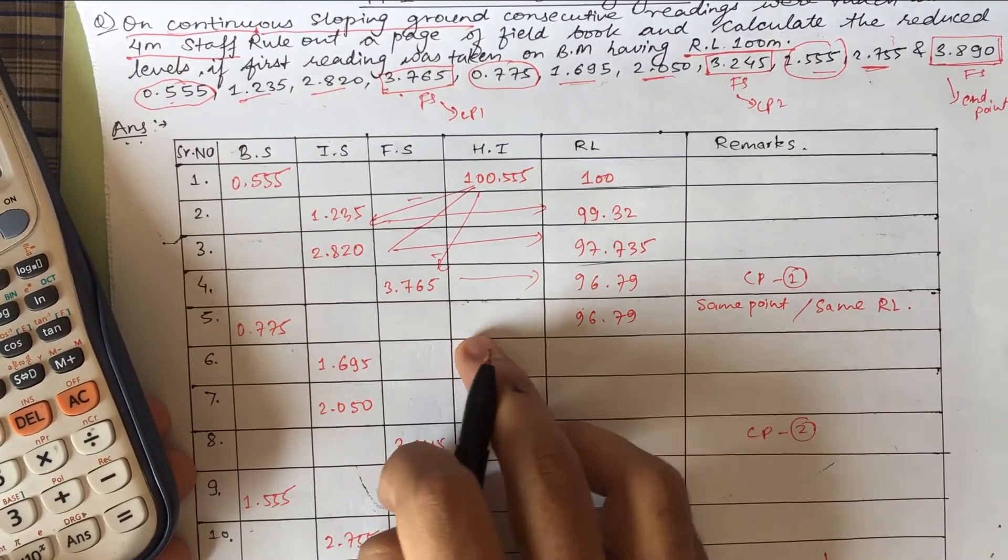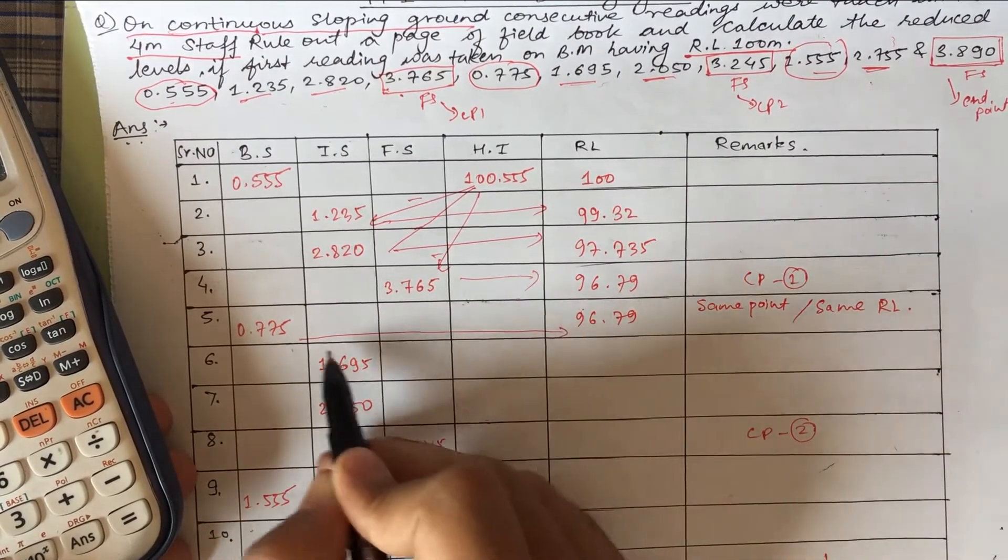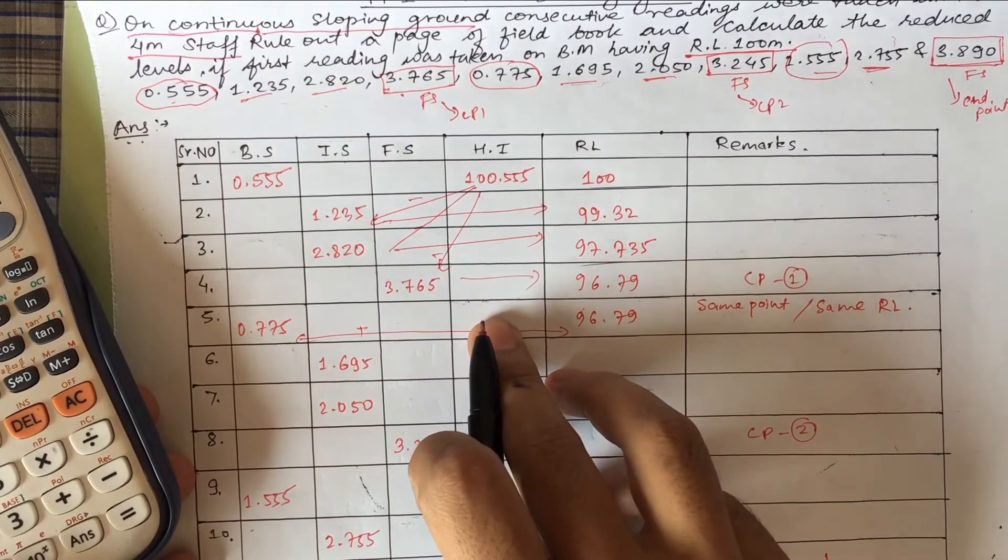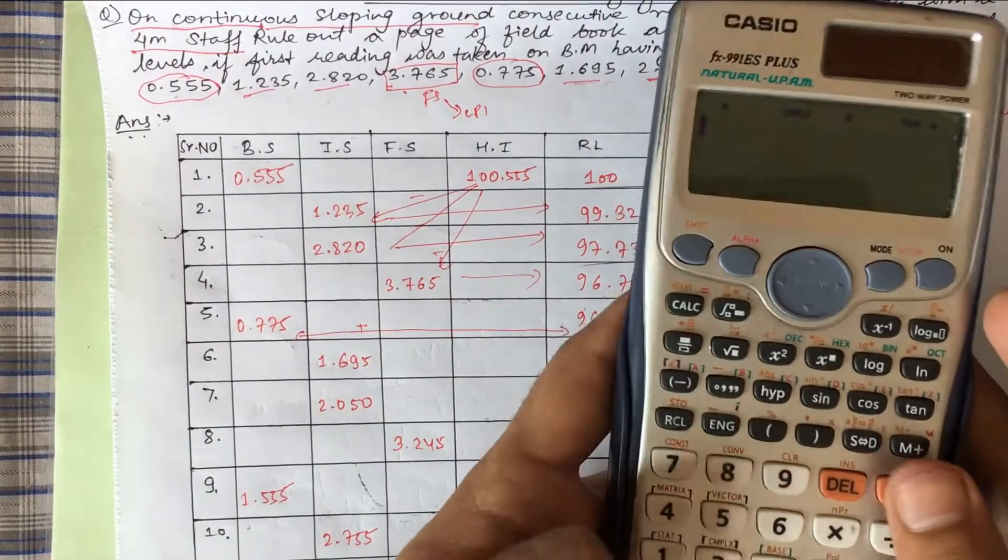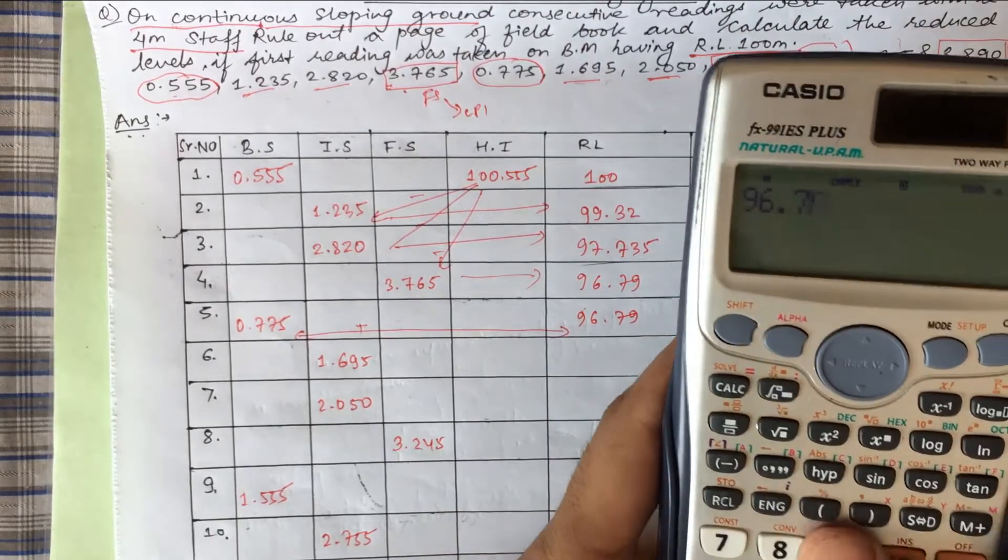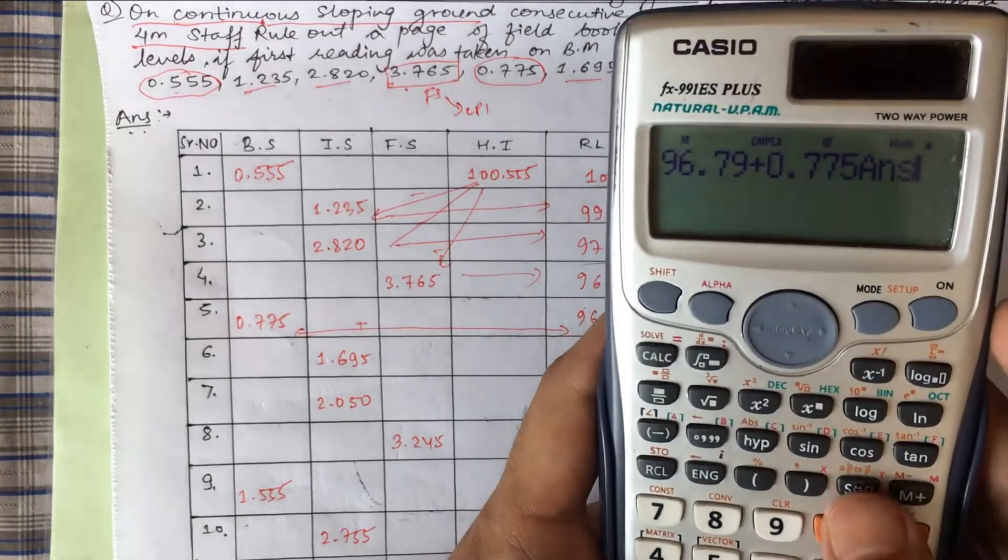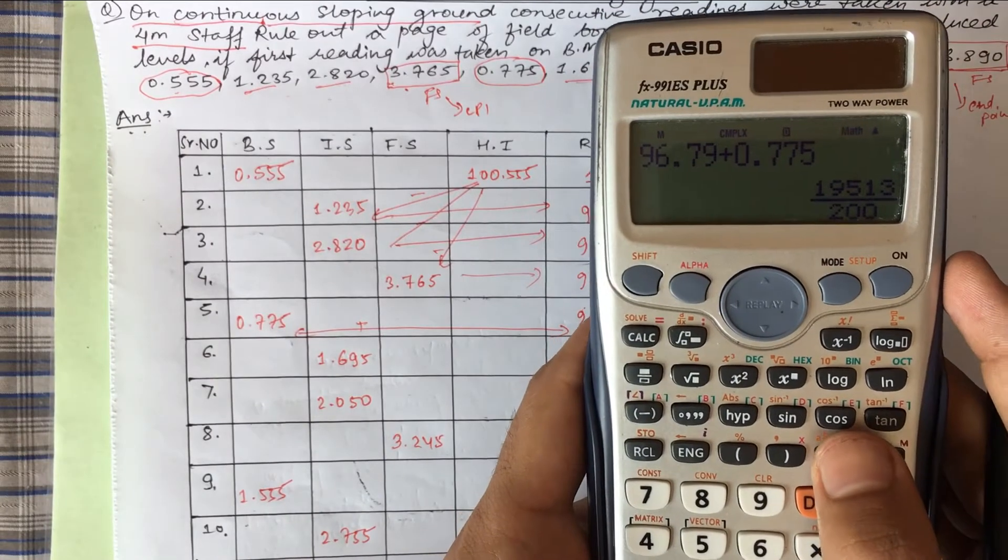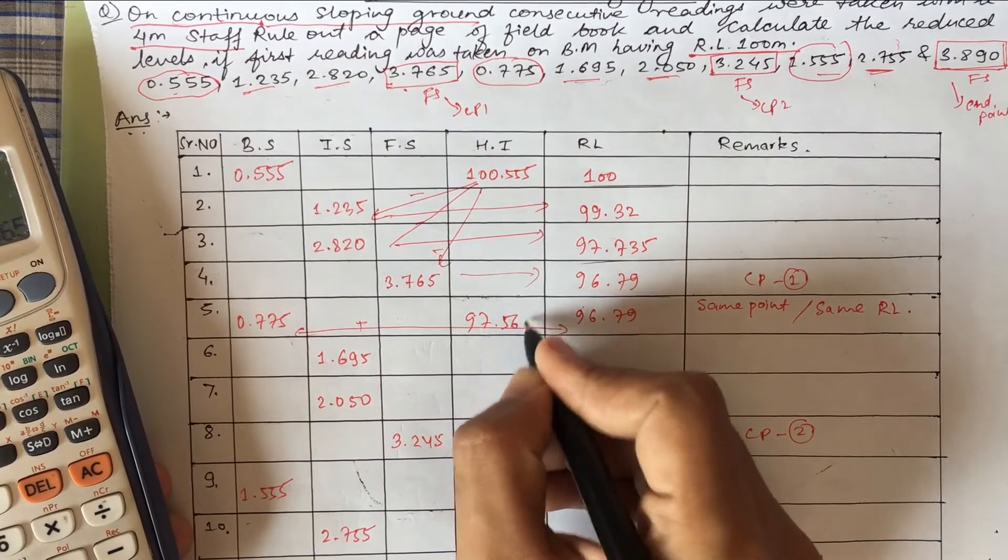Now how to write HI? We'll add this to RL so our HI will come, then we'll do the same process. 96.79 plus 0.775 will be 97.565.